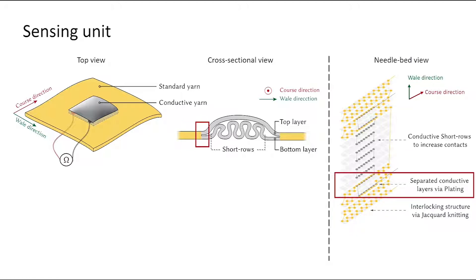use plating to embed graphic designs in front of the sensing units with various yarns and use short rows to create local curvatures with conductive yarns for larger contact area.